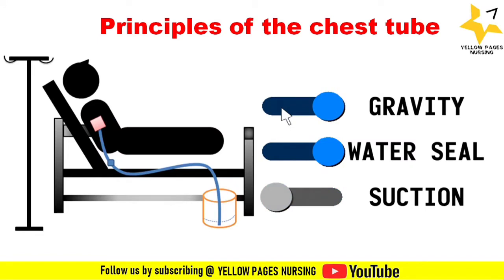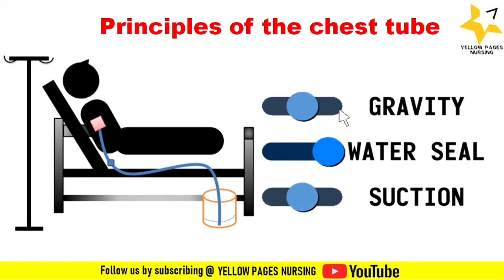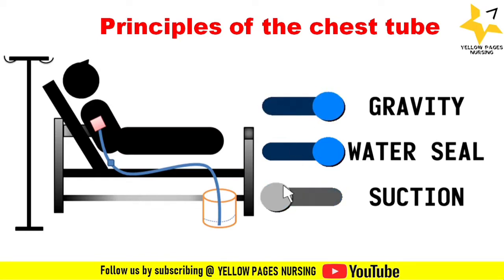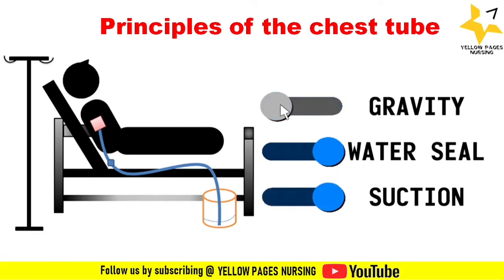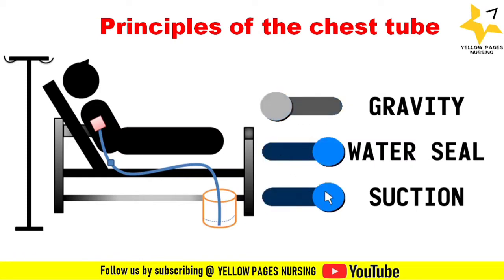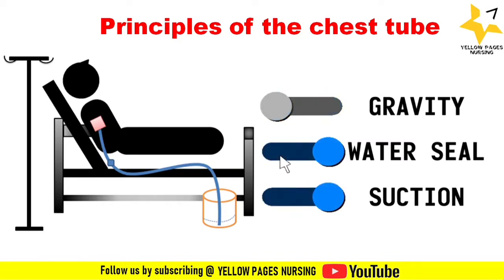The next principle is underwater seal. Underwater seal prevents backflow of air and fluid reentering the pleural space. The distal end of the drainage tube will be submerged two centimeters under the surface level of the water in the drainage chamber, and this creates a hydrostatic resistance of plus two centimeters of water. The underwater seal drainage bag has a marking line up to which water should be filled; if it is not filled there may be chances of backflow.